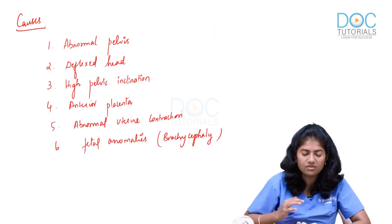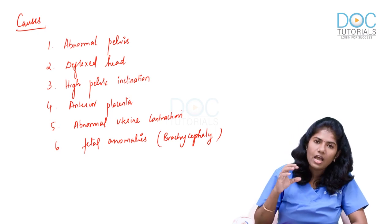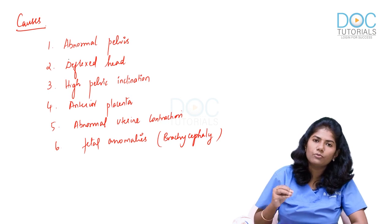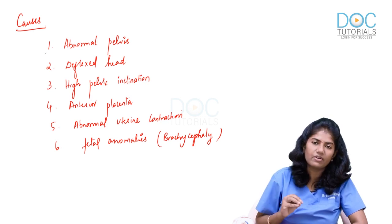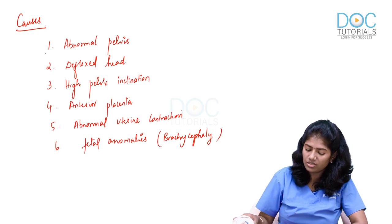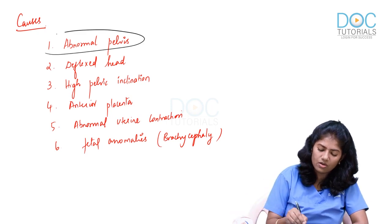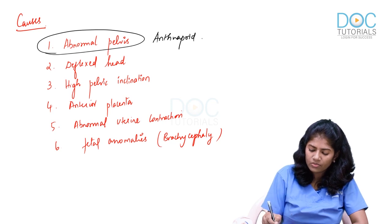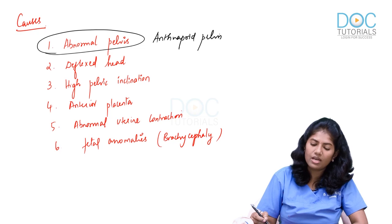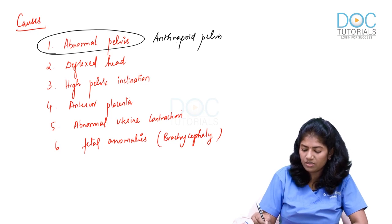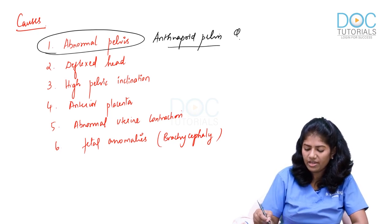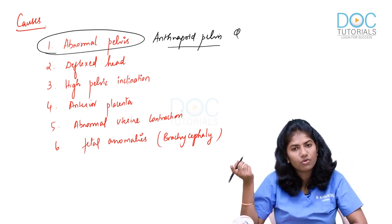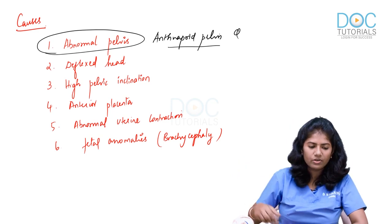The different causes of occipito-posterior position are: abnormal pelvis, deflexed head, high pelvic inclination, anterior placenta, abnormal uterine contractions, and fetal anomalies like brachycephaly. The most common cause — an important MCQ — is anthropoid pelvis. The favourable position in an anthropoid pelvis is occipito-posterior.